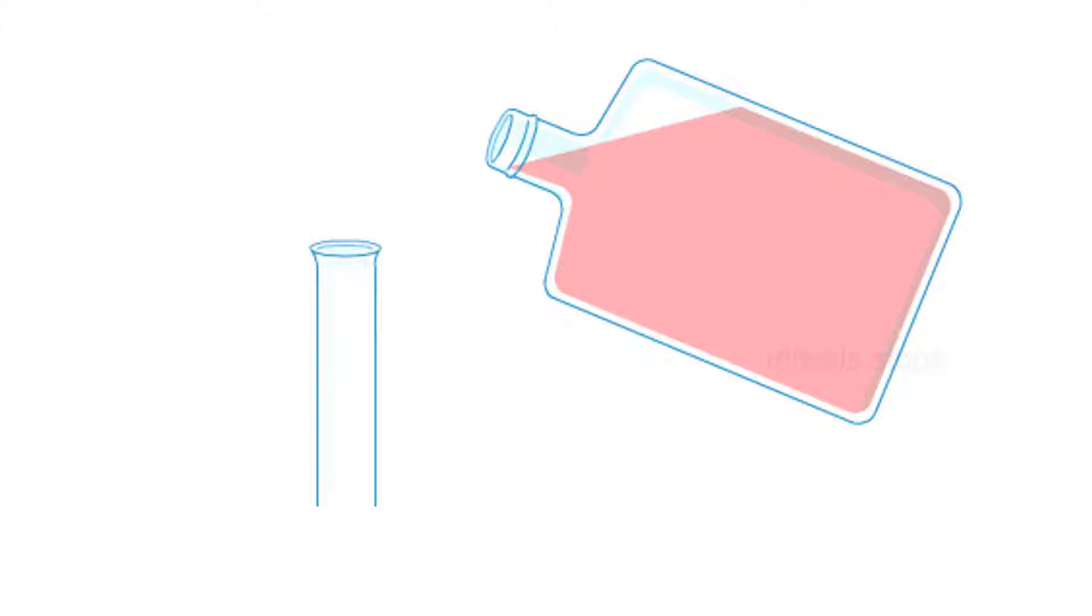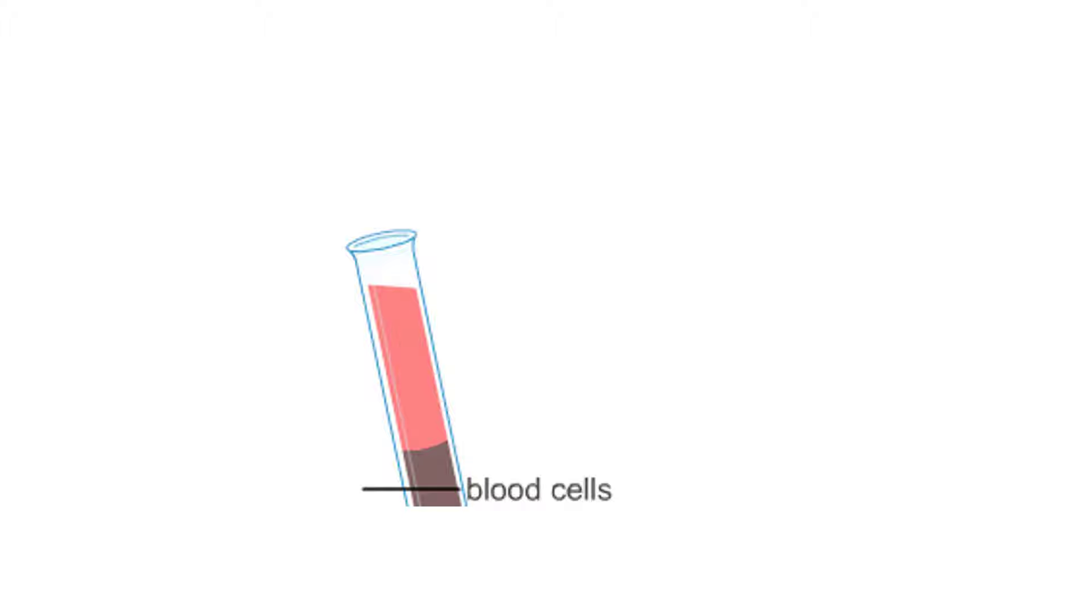The arrested cells are transferred to a centrifuge tube. Centrifugation concentrates the cells at the bottom of the tube. Addition of a hypotonic salt solution causes them to swell up and move apart.